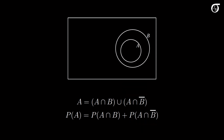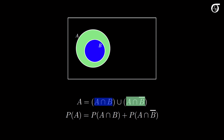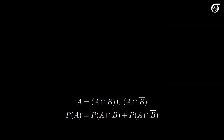And if B is a subset of A, then A intersect B is the same region as B — the blue region — and the intersection of A and B complement is the green region. Once again, the probability of A is equal to the probability of A intersect B plus the probability of A intersect B complement. In all of these situations, the general case holds: the probability of A is the sum of the probabilities of these two intersections.